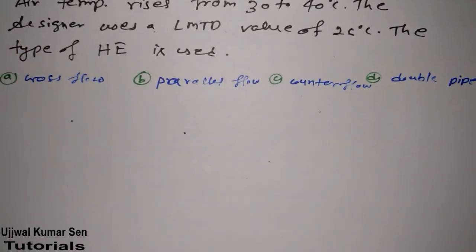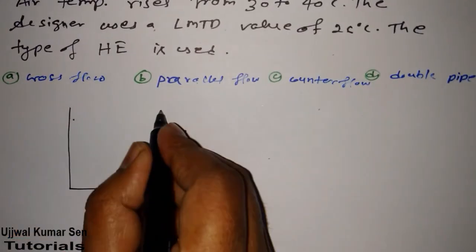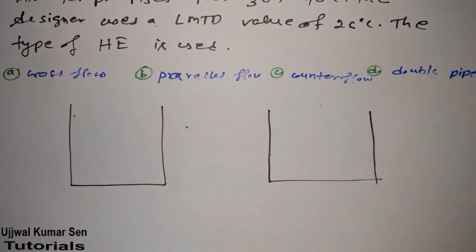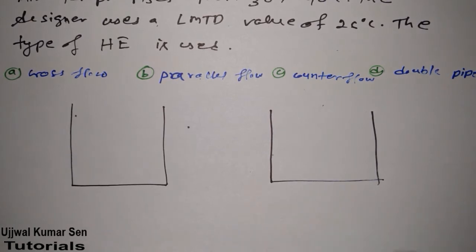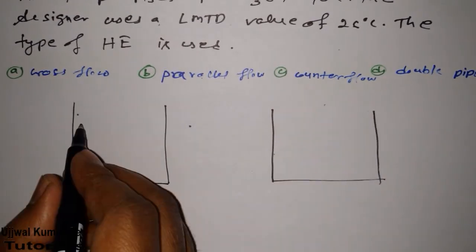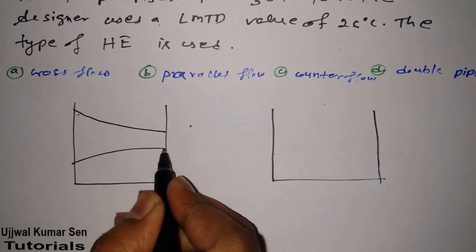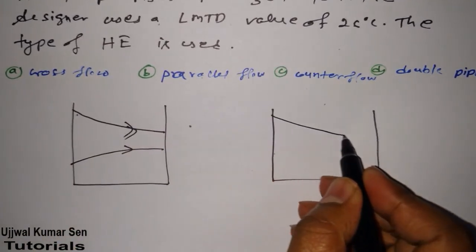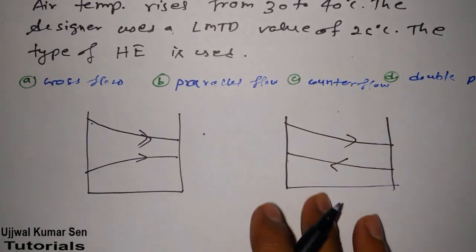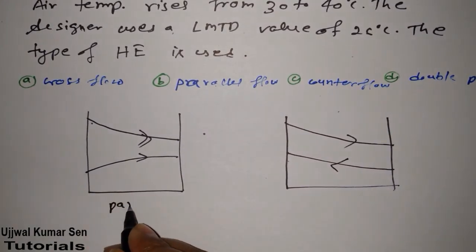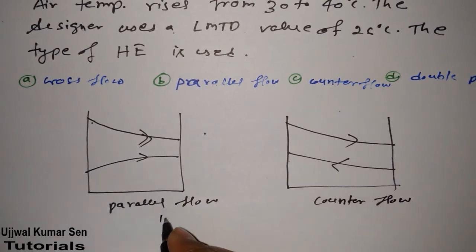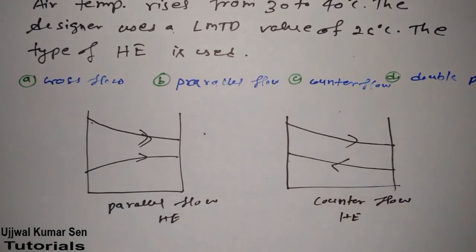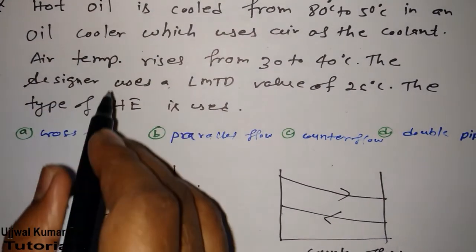So what we have to do in this question is find out LMTD for parallel flow and LMTD for counter flow. I'll share the method with you now. We draw a diagram for a parallel flow heat exchanger and a diagram for a counter flow heat exchanger. In the parallel flow case, the hot fluid cools from 80 to 50, and the air rises from 30 to 40.